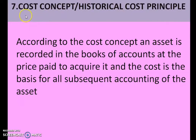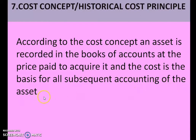The seventh concept is the cost concept or historical cost concept — they are known by these two names. According to the cost concept, an asset is recorded in the books of account at the price paid to acquire it. When you record the asset in the balance sheet, you have to record the price which you paid to acquire it. The cost is the basis for all subsequent accounting of the assets. Whatever you calculate related to that asset, you will take the cost value as the base, and that price will be shown on the asset side of the balance sheet.